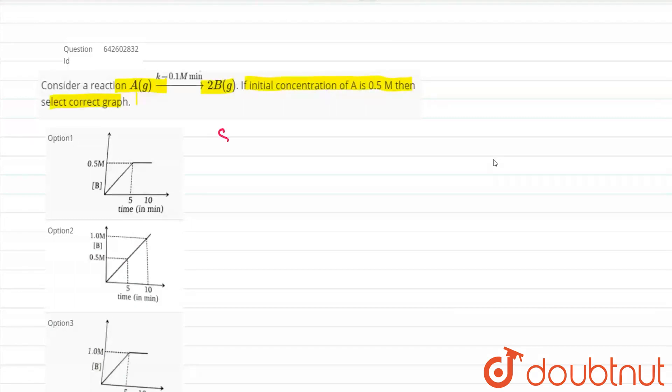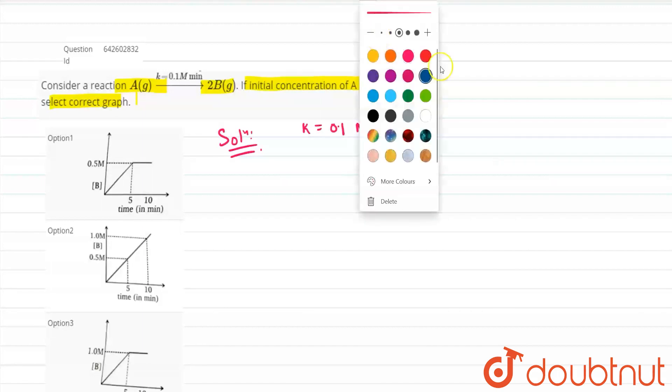So friends there are a lot of interesting things to ponder upon in this question. First of all the value of k is given to us 0.1 mole minute inverse. Now a very important deduction can be made about the order of the reaction.